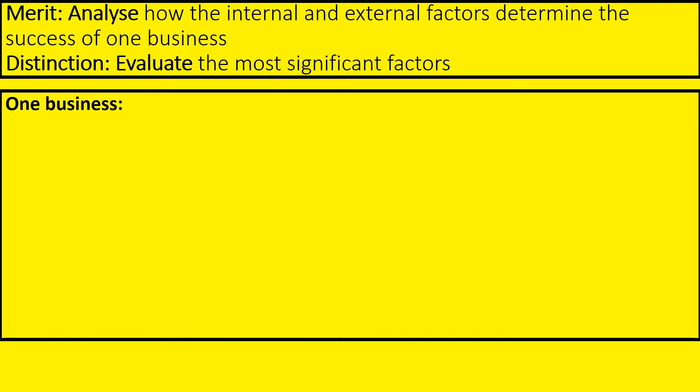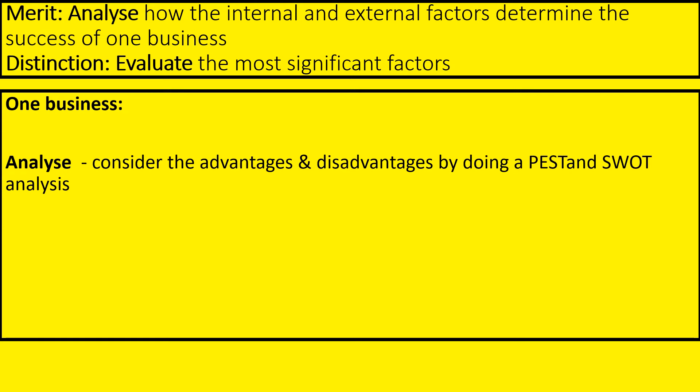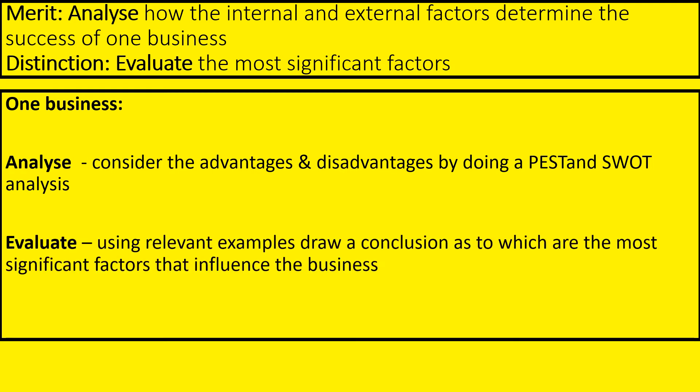The way we're going to analyse is we're going to consider the advantages and disadvantages of our different factors by using PEST and SWOT analysis. Don't worry, I'll explain that in a bit. After that, we're going to evaluate using relevant examples to draw a conclusion as to which are the most significant factors that influence this business. I'm going to explain the PEST and SWOT and then how to evaluate.